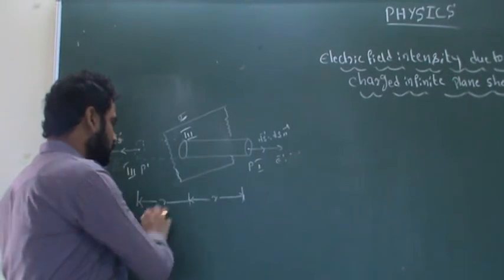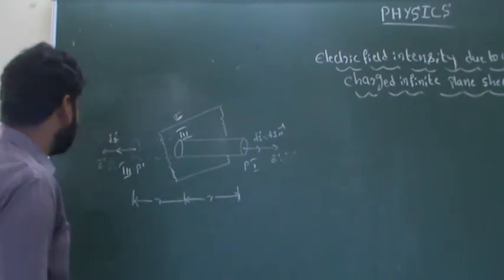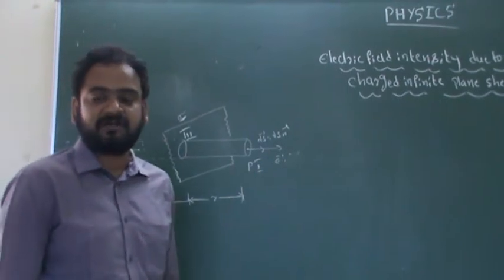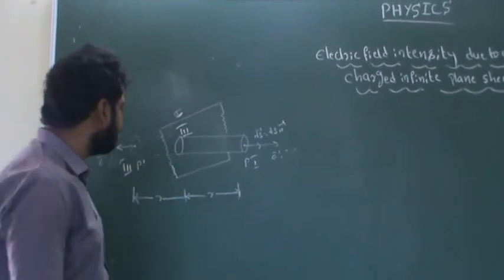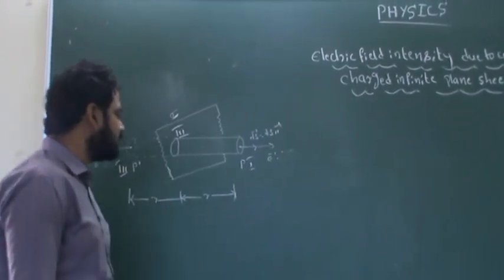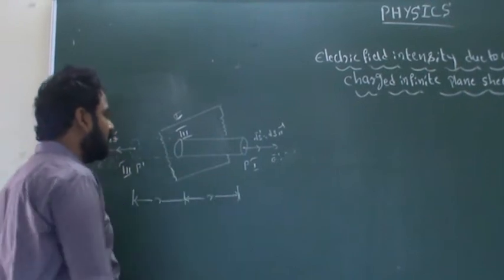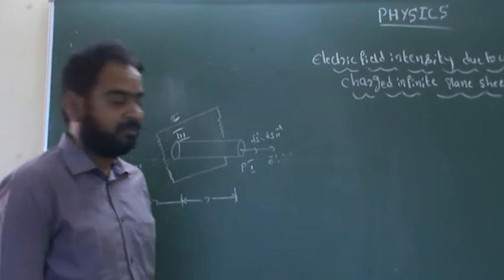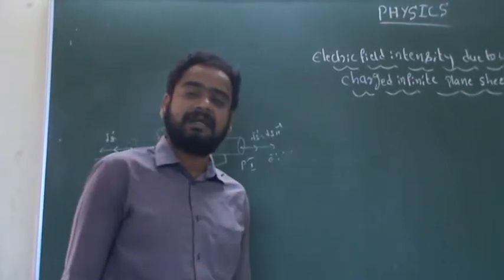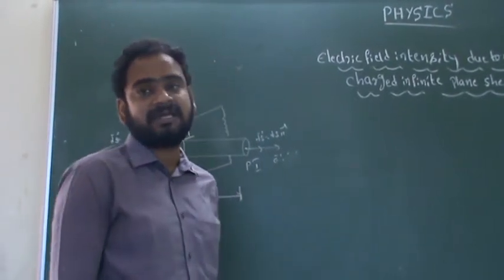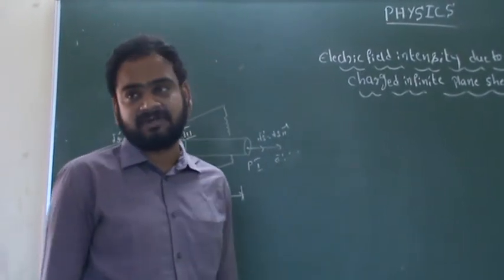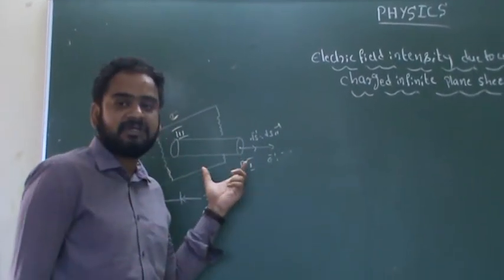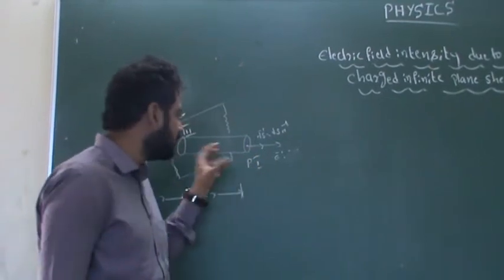We have to find the electrical field intensity at point P due to the surface charge density of the plane sheet. The point P is at a distance r from the Gaussian cylinder. Before finding the electrical field intensity, we use a Gaussian surface. Here the Gaussian surface is a cylindrical shape — we use a cylindrical Gaussian surface.